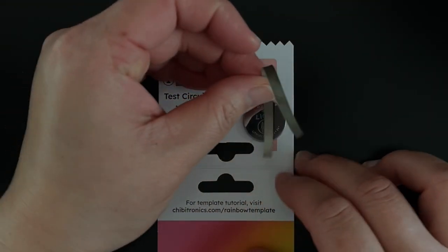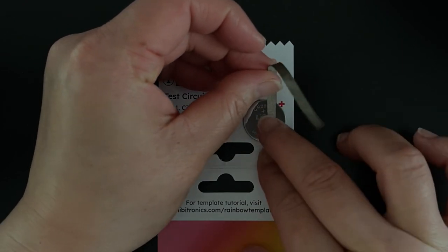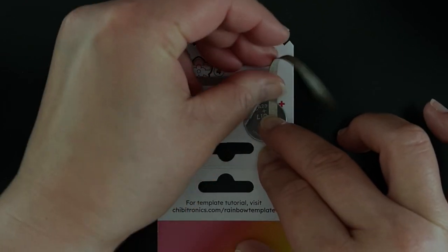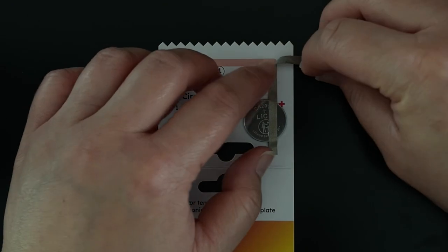Then add another piece of circuit tape following the red positive line. This piece of tape will go over and across the top of the battery, helping to hold it in place.